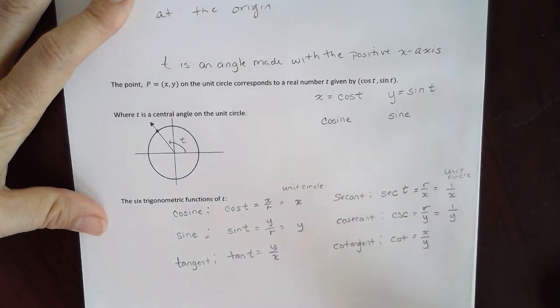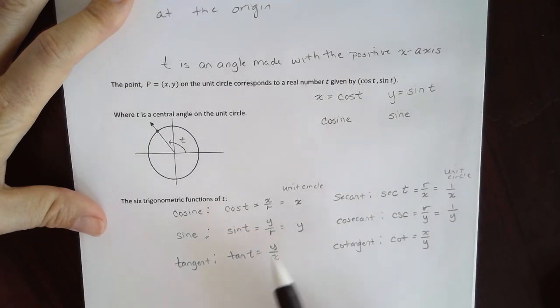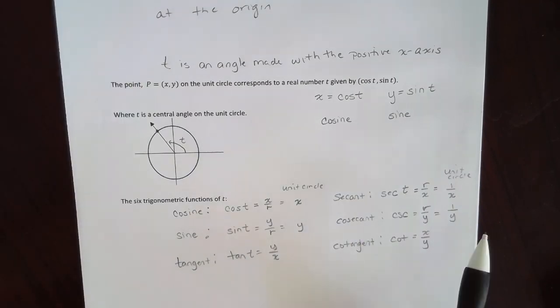Now bear in mind, there are some places where these don't exist. Anywhere the denominator is equal to zero, these functions can't exist. So cosecant, tangent, cotangent, and secant, there are places where they have no value because it would be 1 over 0, which is undefined.